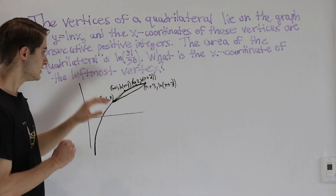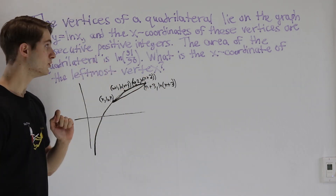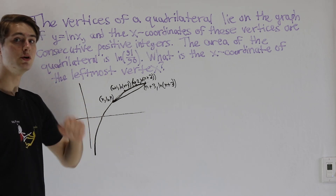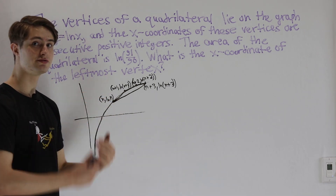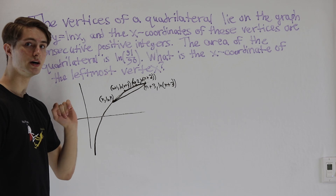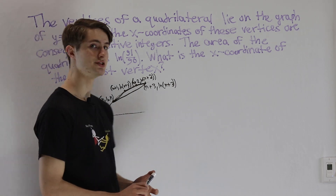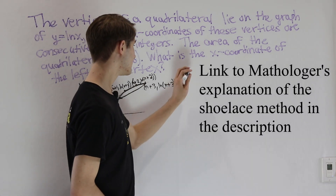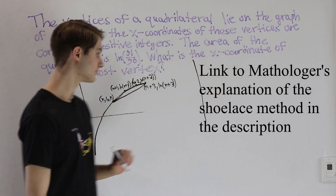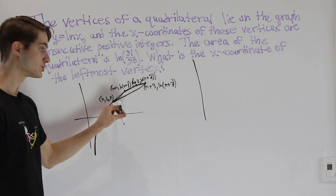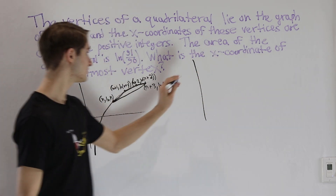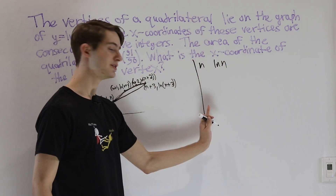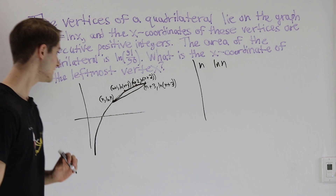Just by knowing the coordinates of those four points — the vertices of our quadrilateral — we can use the shoelace method to find the exact area. Here's how it works: we start by writing down these coordinates, picking an initial point. In this case, I'm going to choose (n, ln n), with x-coordinates on the left and y-coordinates on the right.